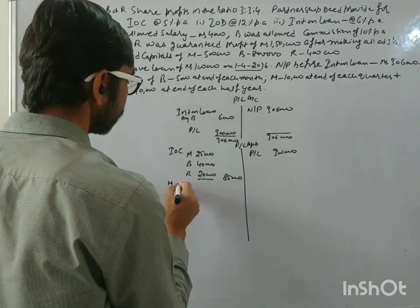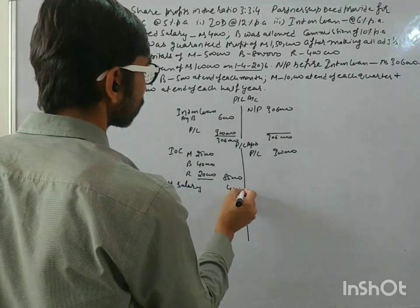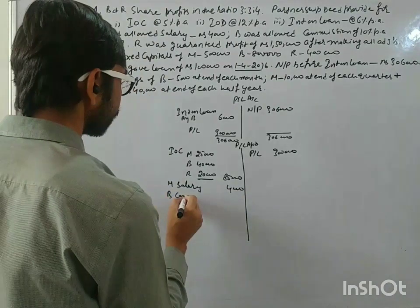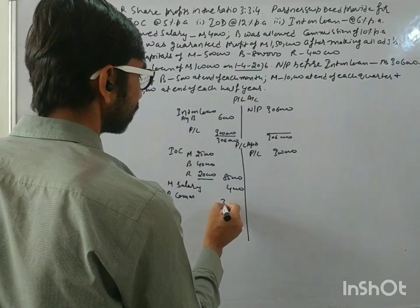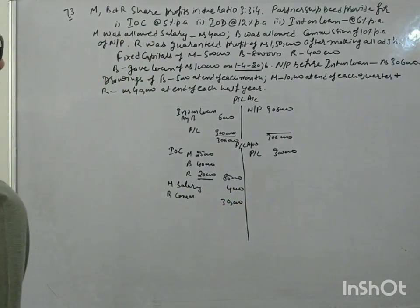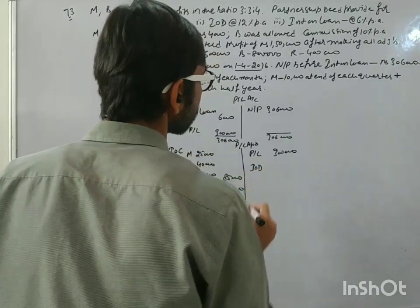Then M was allowed a salary - how much? 4,000. B was allowed a commission, 10% of net profit. That is 3 lakh. 10% of 3 lakh is 30,000. Now, interest on drawings.